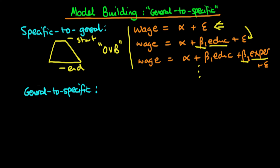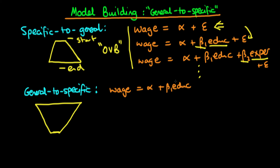The process I'm going to advocate is general-to-specific modelling. The idea is that you start off with a model which is very general and work down until you get to a model which is relatively specific. The model we might start with could be: wage = alpha + beta1·education + beta2·experience + beta3·parental income + other parental education measures + epsilon. This general model contains all of the variables we think are important to the underlying economics, and the signs and magnitudes of their effects also make economic sense.